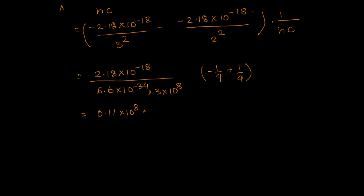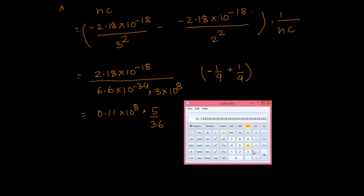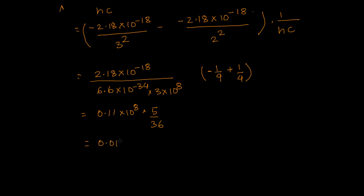The powers of 10: minus 18 plus 34 minus 0 gives us 10 to the power 8. So 0.55 divided by 36 equals approximately 0.01528, which is 0.0153 times 10 to the power 8. Expressing it in standard form, that is 1.53 times 10 to the power 6.